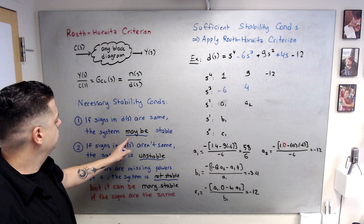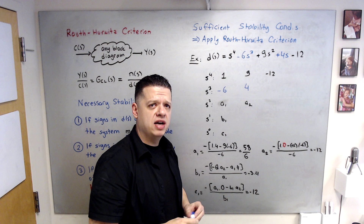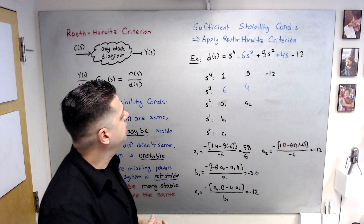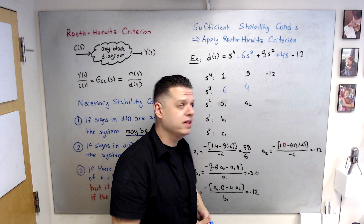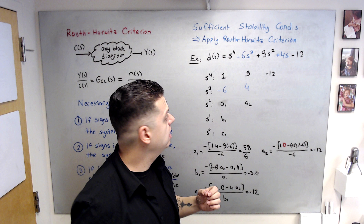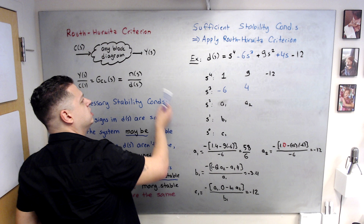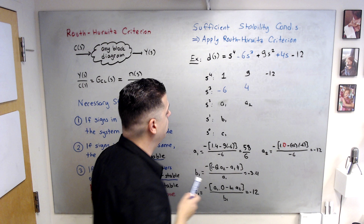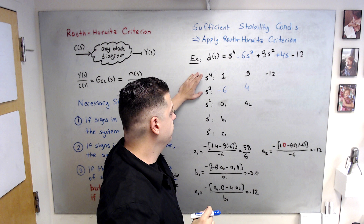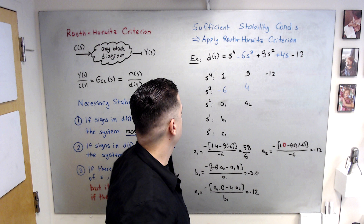We need to proceed further for 'maybe stable' and 'maybe marginally stable' cases, or if you want to characterize how many poles you have on the right-half plane versus left-half plane. You can apply the sufficient stability condition, which is nothing but the application of the Routh-Hurwitz criterion. Let's demonstrate the Routh-Hurwitz criterion with a simple example. Say you find the closed-loop system and end up with this denominator: s⁴ − 6s³ + 9s² + 4s − 12. First, you need to create a table. The first two rows come from the coefficients of this denominator.